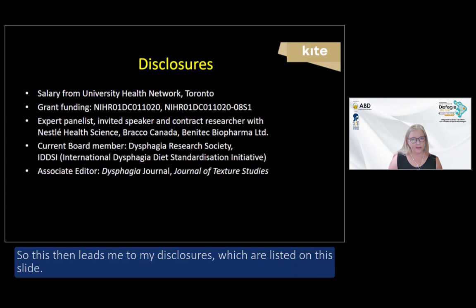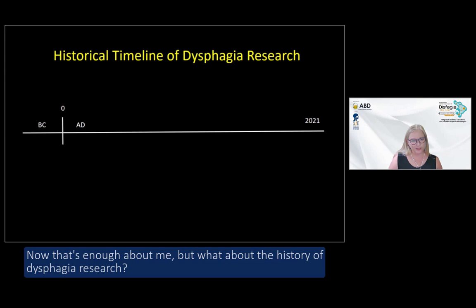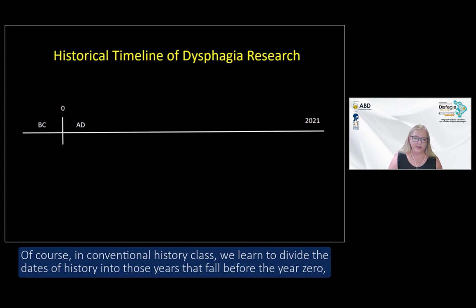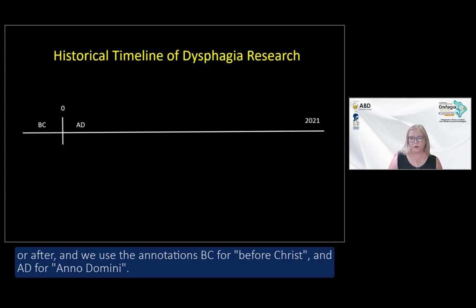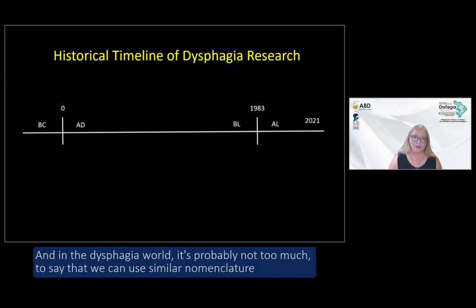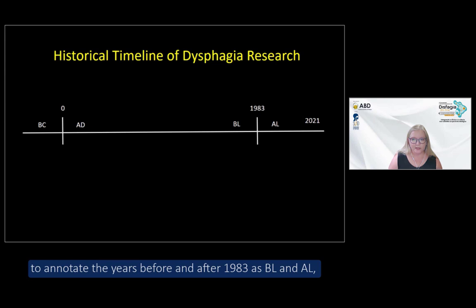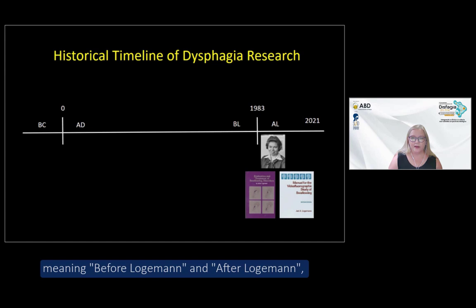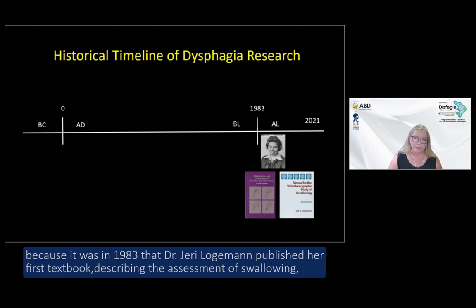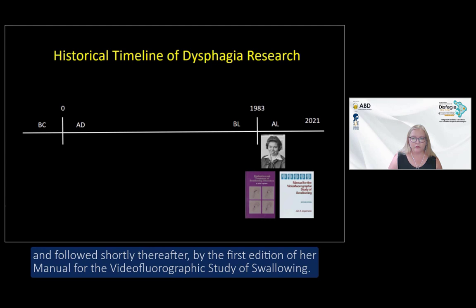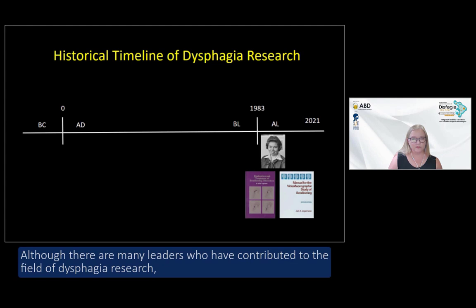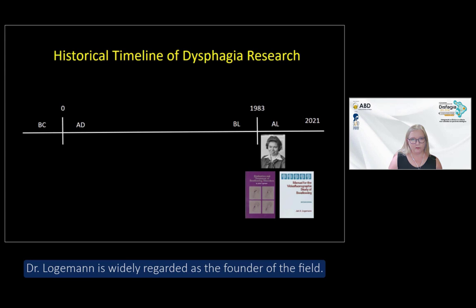This leads me to my disclosures, which are listed on this slide. Now, what about the history of dysphagia research? In conventional history class, we divide dates into before and after year zero using BC and AD. In the dysphagia world, it's not too much to say we could use similar nomenclature for the years before and after 1983 — B-L and A-L, meaning before Logeman and after Logeman — because it was in 1983 that Dr. Jerry Logeman published her first textbook describing the assessment of swallowing.